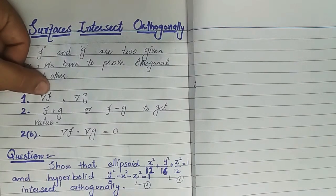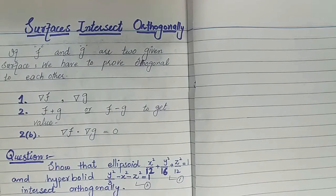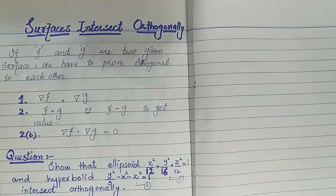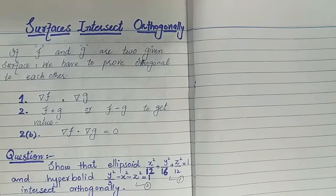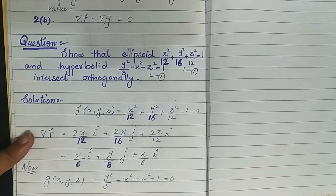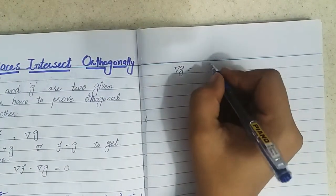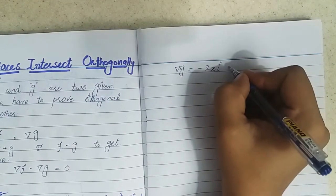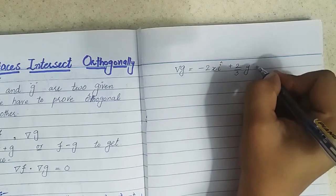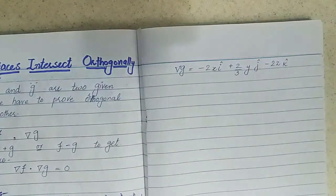By step one, we find nabla F, which equals (∂F/∂x)i + (∂F/∂y)j + (∂F/∂z)k. For the second surface G, we find nabla G, which equals -2x·i + (2/3)y·j - 2z·k. This completes step one.